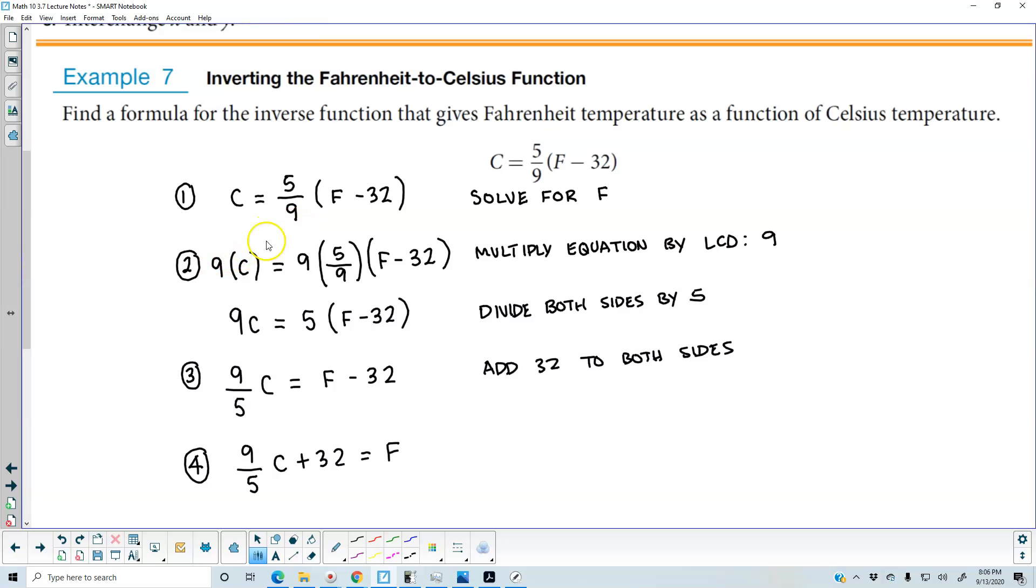The first thing to do is multiply both sides by the LCD which is 9. So we end up getting 9C, and we can eliminate this 9, and we end up getting 9C which is equal to 5 times F minus 32.